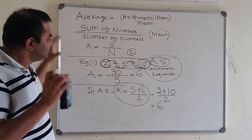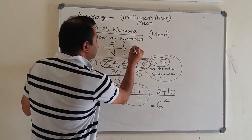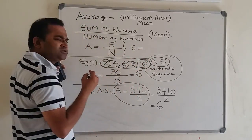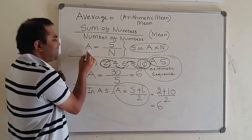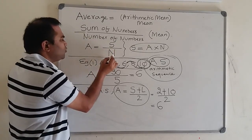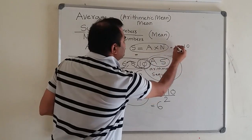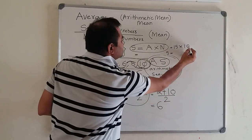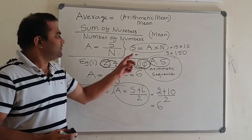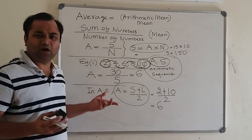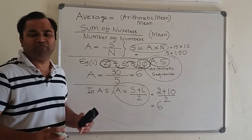From the average formula A = S/N, you can derive another useful formula: S = A × N — the sum equals average times number of numbers. For example, 10 numbers with an average of 15 have a sum of 150. This formula is useful when the sum must be found given the average and count. Thank you for watching — keep watching our videos and don't forget to subscribe.